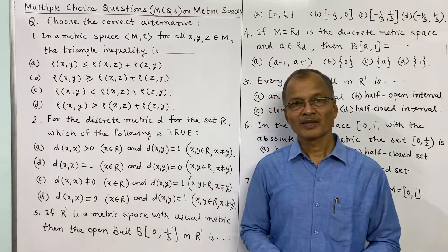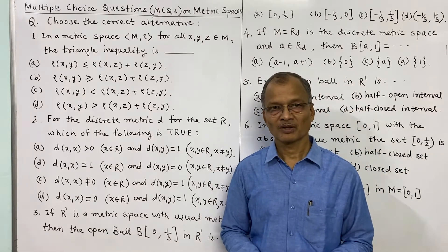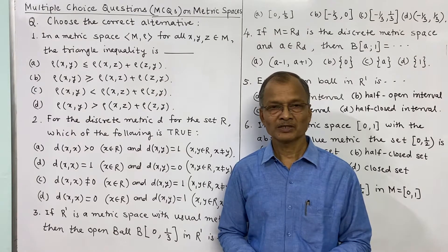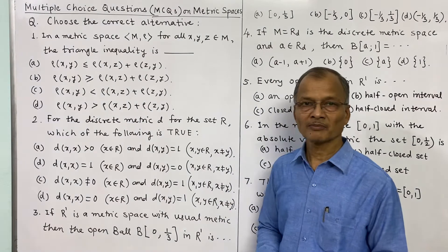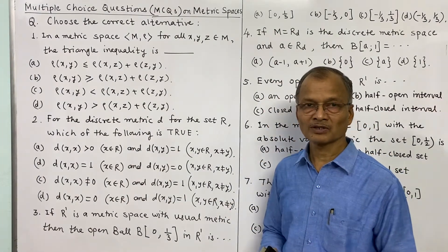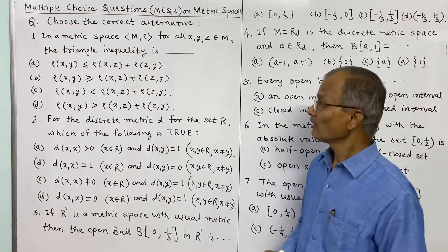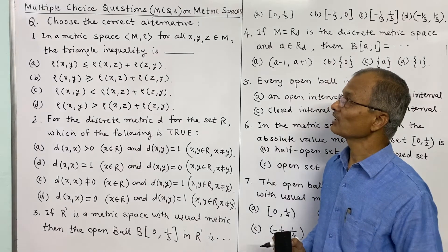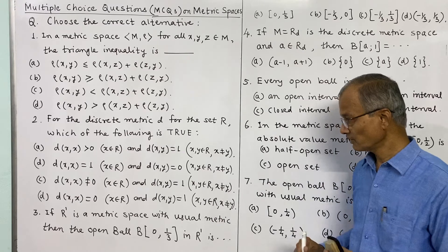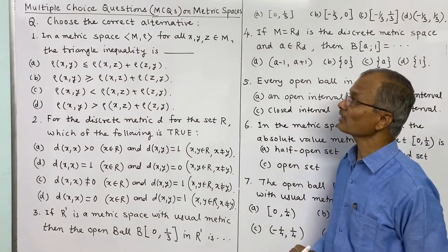Dear student friends, today we shall solve some multiple choice questions on metric spaces — the part we have studied up till now: definition of metric spaces, limits on metric spaces, continuous functions on metric spaces, open sets and closed sets and their properties. We shall consider these multiple choice questions one by one. To save time, I have written these questions here, and we have to choose the correct alternative.